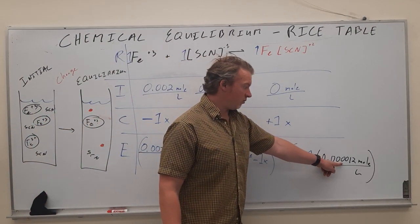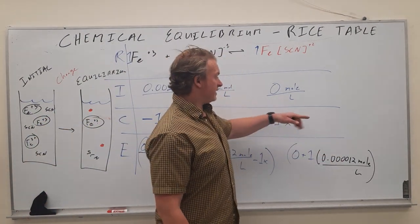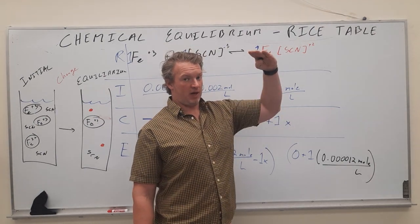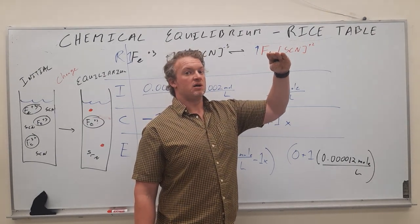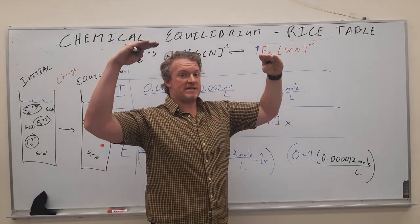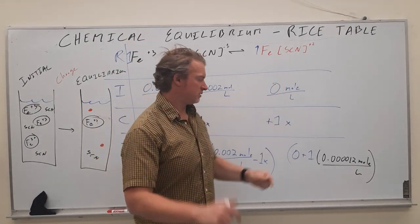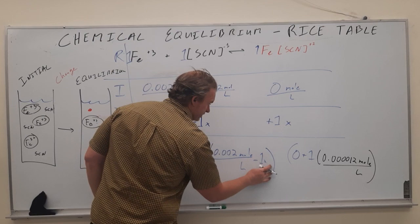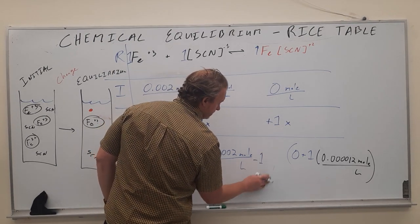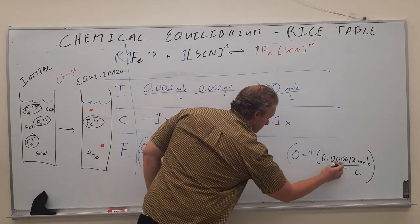So 0.00012 moles per liter. That is how much this went up the product. Logically, that means the reactants must have went down the same amount. So we would put in the zero, zero, what is that, four zeros?